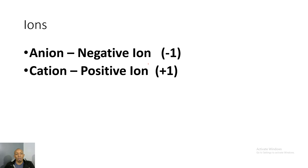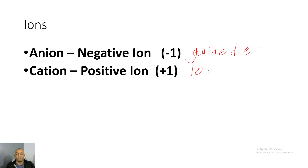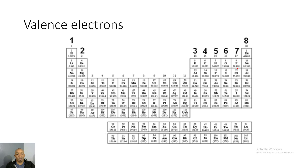It's important to know that when a negative ion is made, it is called an anion. That means it has a negative charge — it has actually gained an electron. And then if there is a positive ion, which is called a cation, that means it has lost an electron.